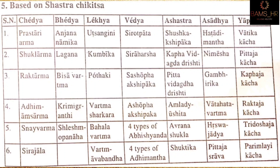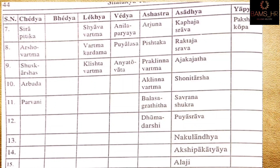And Pramalakasha as well. The categories we need to study are chedya, vedya, lekhya, bhedya, asadhya, and yapya — all of which have been covered.